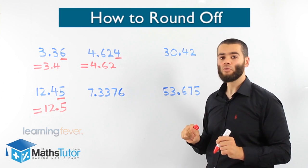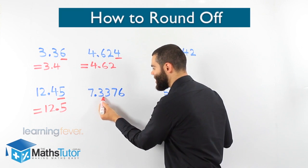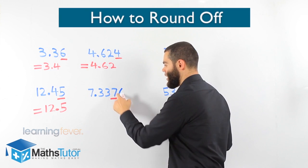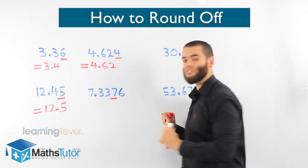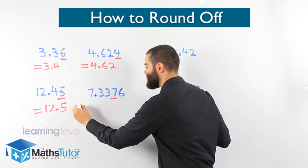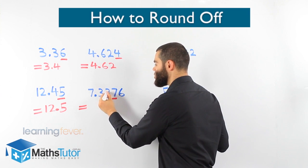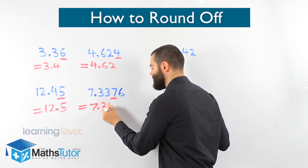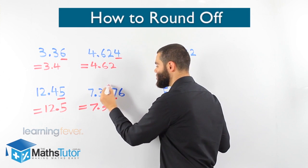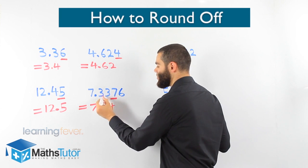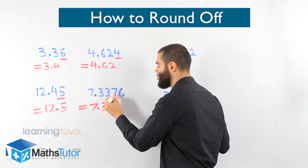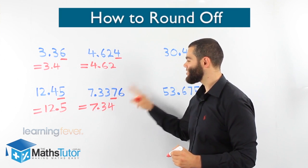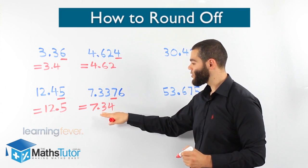Round off to two decimal places again. We look to the number on the right of the second decimal place — there it is. Is it five or more? Yes — seven is larger than five, so it will push the number up. 7.3376 rounded to two decimal places: the 7 pushes the 3 up and it becomes 4, giving us 7.34. Thanks to the 7, we round up to 7.34.